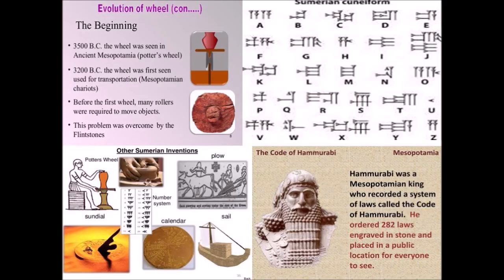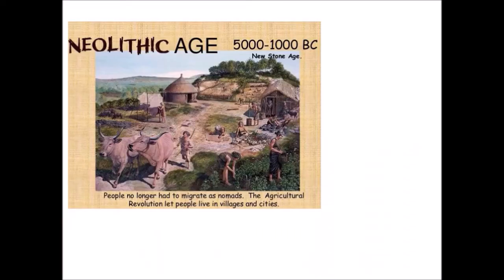Contributions of the Mesopotamian Civilization. The invention of the potter's wheel helped with transport. The calendar system of 360 days was developed. The cuneiform system of writing and the Hammurabi law code were important legacies. This brings us to the end of the session.